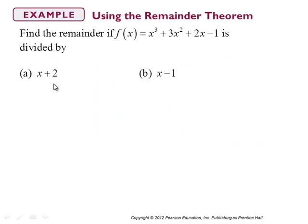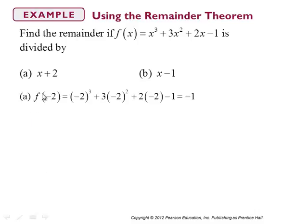So what if we ask: is x + 2 a factor of x³ + 3x² + 2x − 1? What you do is rewrite x + 2 as x − (−2), then take F(−2) and see what you get. Replacing x by −2, the result is −1. Because F(−2) = −1, that means x + 2 is not a factor of this polynomial, because the remainder is −1.